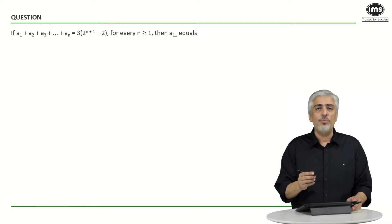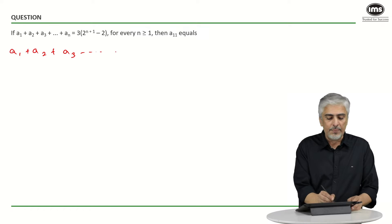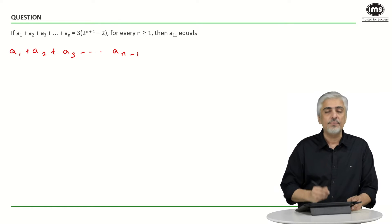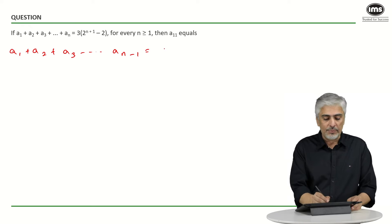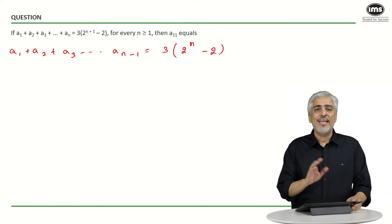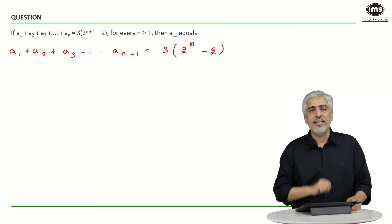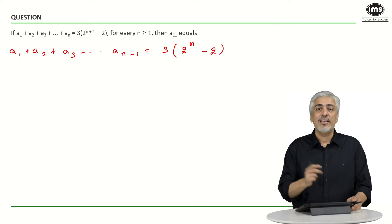So if I have to look at the right way to do it, I know what is a₁ + a₂ + a₃ up till aₙ. If I take the next step and I find a₁ + a₂ + a₃ up till aₙ₋₁, what will that become? It will become 3 into 2 raise to n minus 2. So what have I done? I have just replaced n with n minus 1. So on the left hand side also I have replaced n with n minus 1, on the right hand side also I have replaced n with n minus 1.